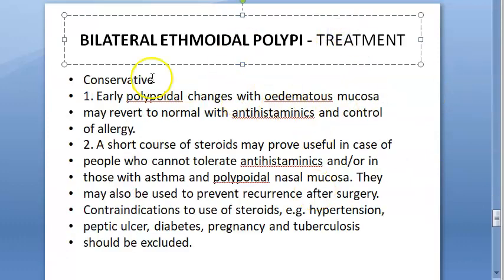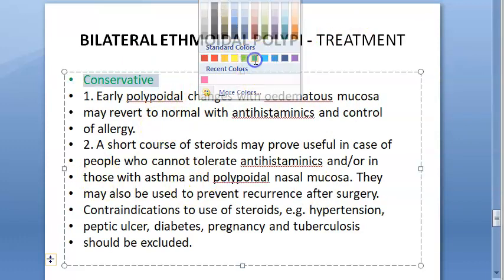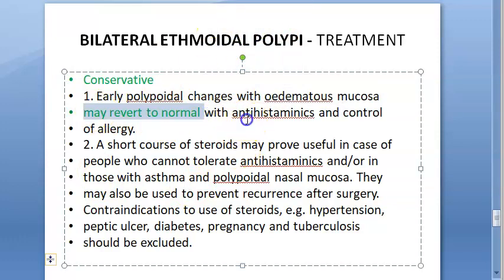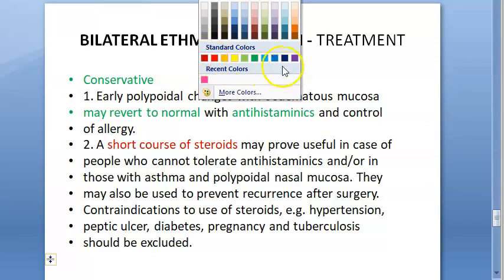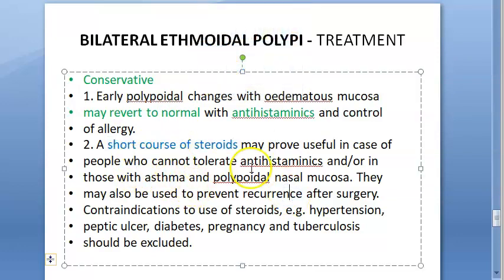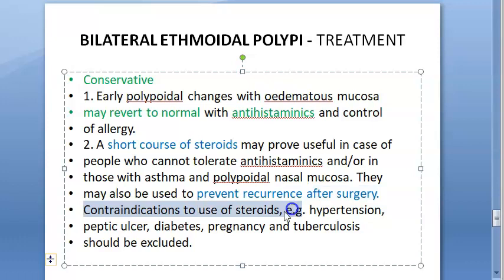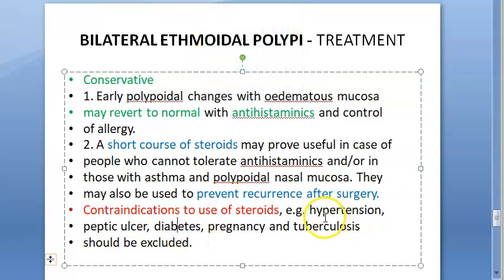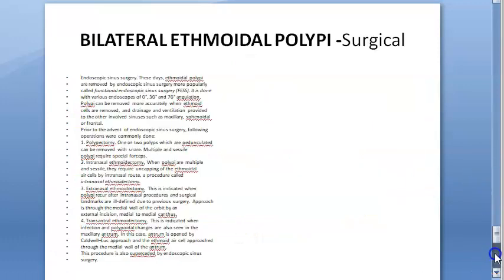For treatment, conservative management includes antihistamines, which may help polyps revert to normal. A short course of steroids can be given, especially for those who cannot tolerate antihistamines, those with asthma, or those with polypoidal nasal mucosa. Steroids may also prevent recurrence after surgery. Contraindications to steroids include hypertension, peptic ulcer, diabetes, pregnancy, and tuberculosis.